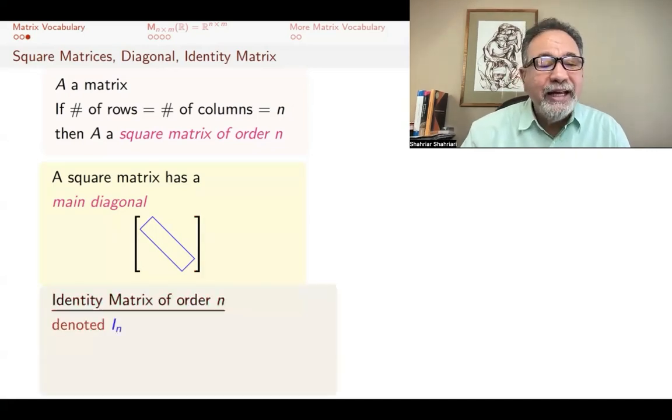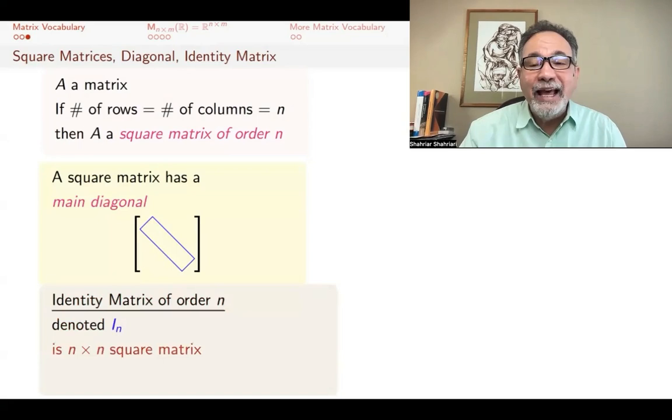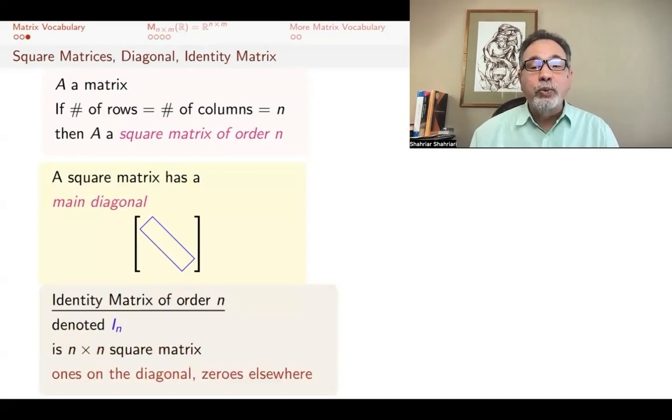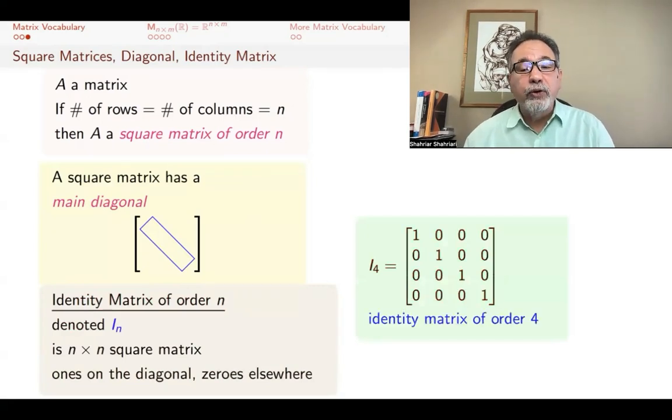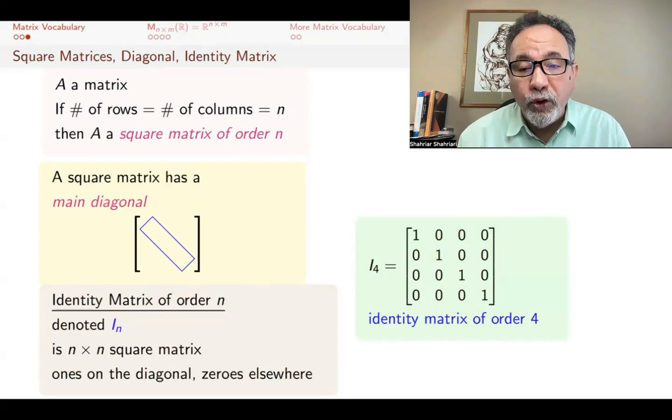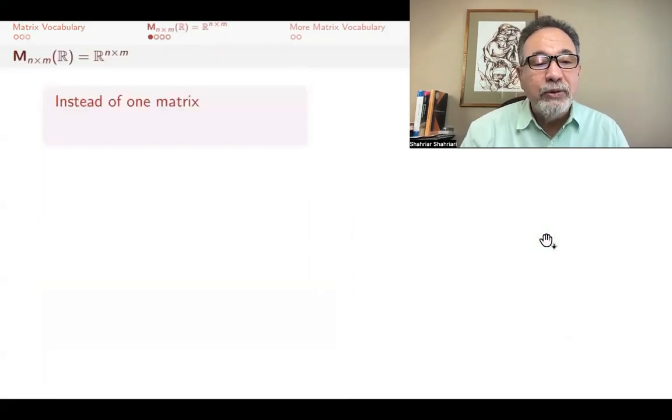Identity matrix of order n is denoted by i_n. It's an n by n square matrix that has ones on that main diagonal and zeros everywhere else. i_4, the identity matrix of order 4, looks like this. It's 4 by 4. Down the diagonal, it has all ones, and everywhere else, it has zeros.